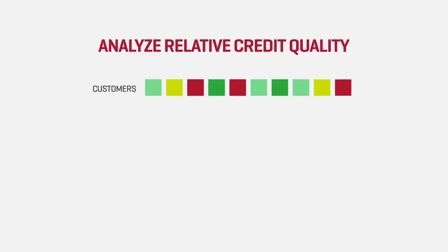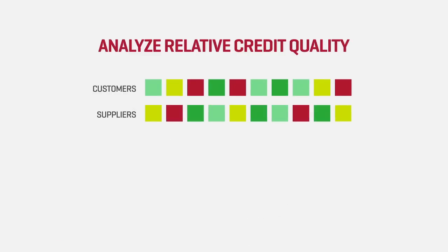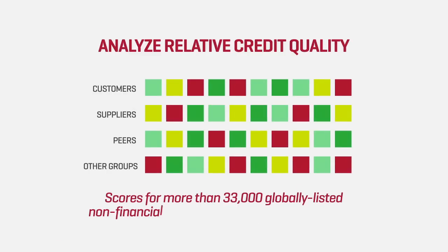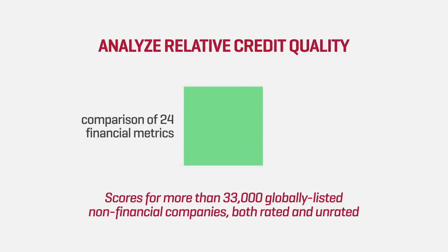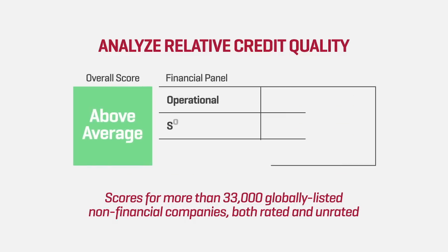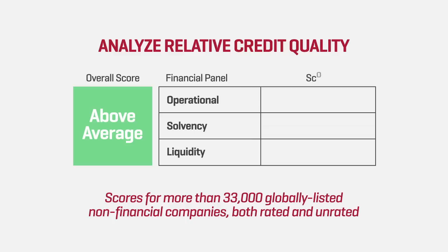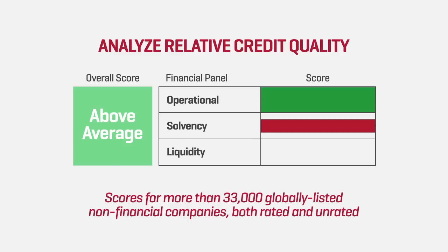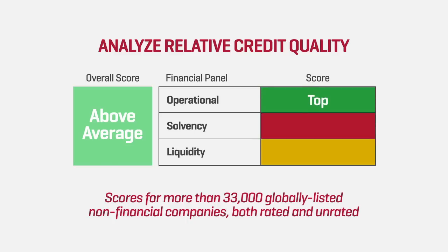Analyze the relative credit quality of customers, suppliers, peers and other groups of companies with a comparison of 24 financial metrics per company, plus an overall company score. Operational, solvency and liquidity scores are color-coded to easily see if they are top, bottom or below average relative to other companies in a selected group.